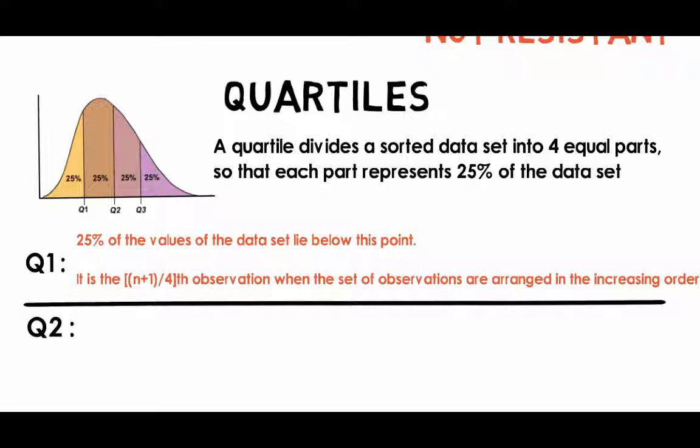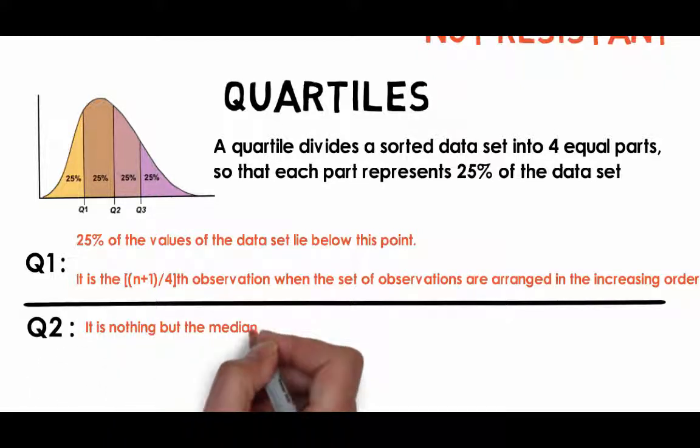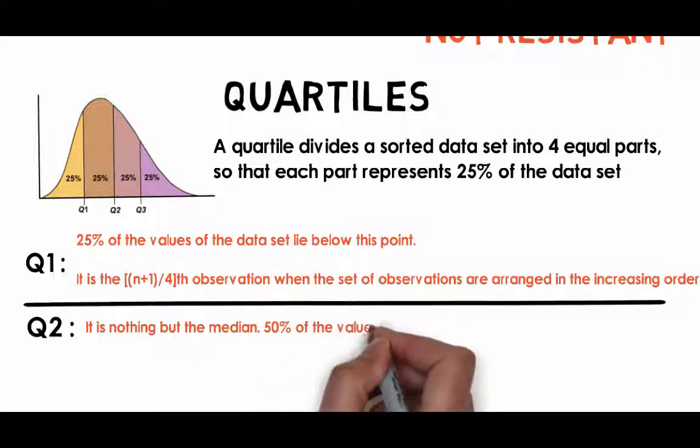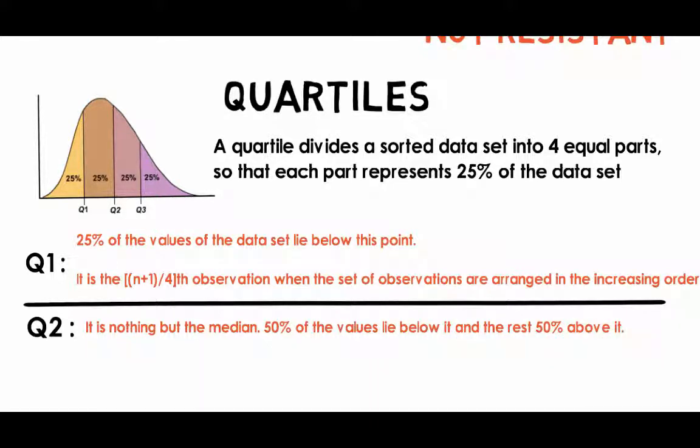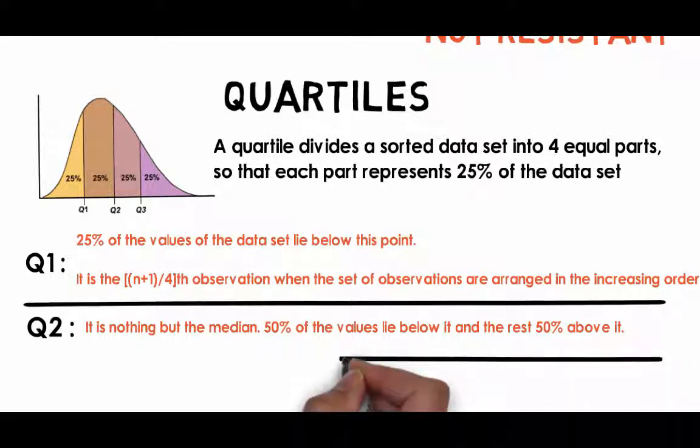Q2, also known as the second quartile, is nothing but the median. 50% of the values lie below it and the rest 50% above it. Median is the n plus 1 by 2th value of the data set.